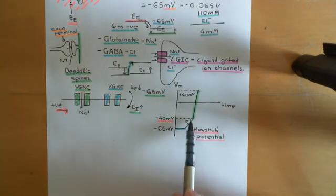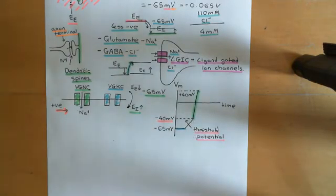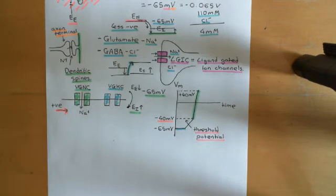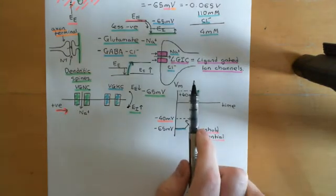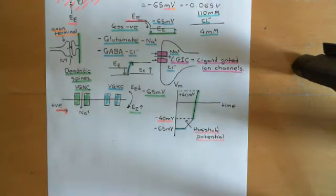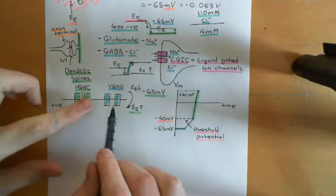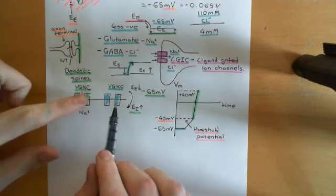The voltage-gated potassium channels were activated to open the instant the electrical potential difference across the cell membrane got beyond negative 40 millivolts. They were activated to open, but they were so faffy that they're only starting to open once the voltage-gated sodium channels have done their job already. So now the voltage-gated potassium channel is open.